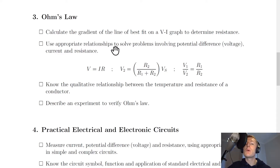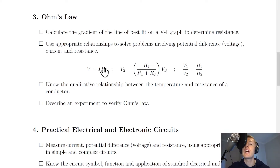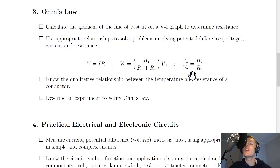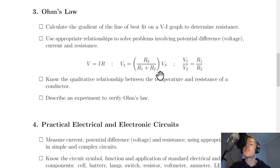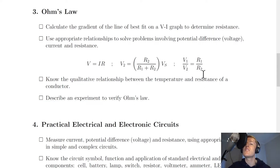You also need to use appropriate relationships to solve problems involving potential difference (voltage), current, and resistance. For Ohm's Law we have V = IR (voltage equals current times resistance). There are also two potential divider formulas: V2 = (R2 / (R1 + R2)) × VS, which is for potential dividers where the supply voltage is known, and a second formula where the ratio of voltages equals the ratio of resistances when the supply voltage is not known.